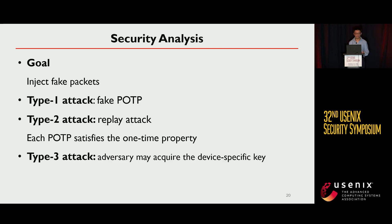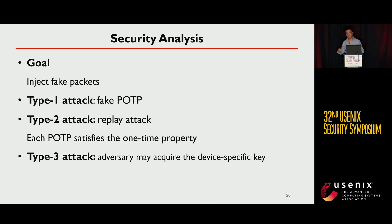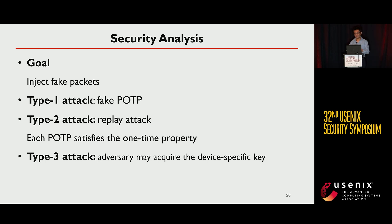We also conduct security analysis. We assume attackers try to inject a large volume of fake packages into the Zigbee network and consider three types of attackers. First, attackers using fake POTP: the probability of successfully injecting an authenticated fake POTP depends on the key length. Second, replay attackers: since each POTP satisfies the one-time property, our scheme defeats replay attacks. Third, attackers who obtain a device-specific key: since the key is device-specific, the transmitter can easily detect the compromise.